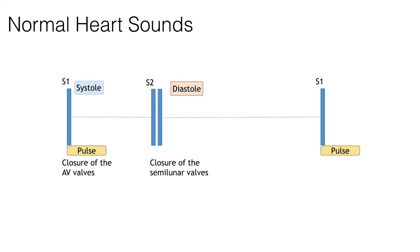Starting with normal heart sounds — this is composed of two sounds. First you have S1, the 'lub', which is the sound of closure of the AV valves. Then you have S2, the 'dub', which is the closure of the semilunar valves, the mitral and tricuspid valve. The phase of the cardiac cycle between S1 and S2 is systole, and between S2 and S1 is diastole.